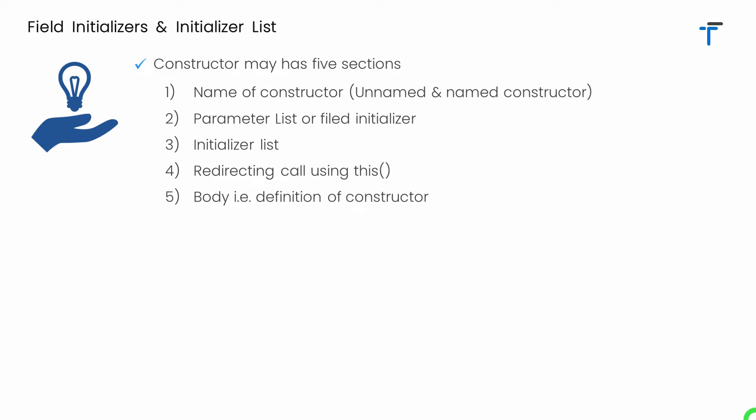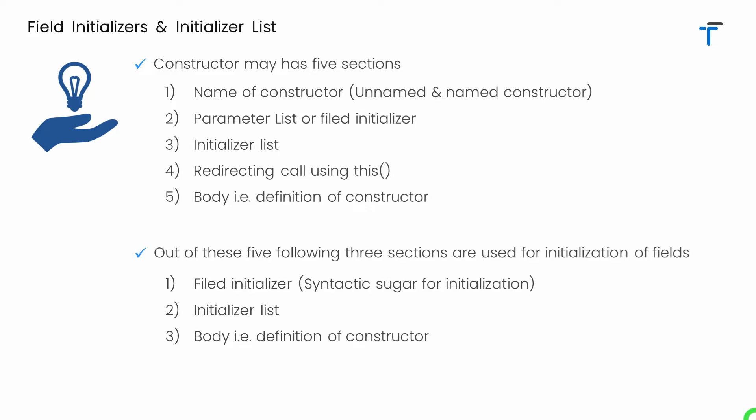You might know the body section well. One important thing to notice: a single constructor cannot have all five sections. There are limitations on which sections a single constructor can have. Now, out of these five sections, there are three important sections that allow us to perform initialization of a field, that is to initialize our data members.